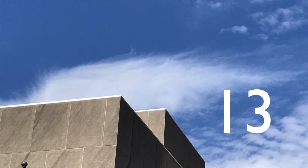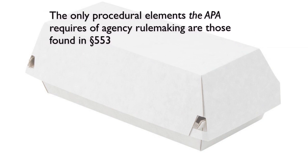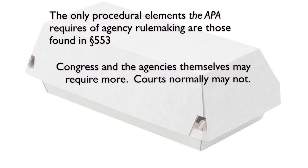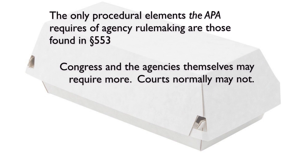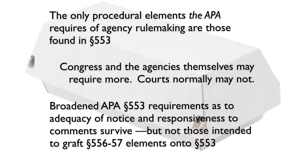Welcome back. Previously on Administrative Law, we continued our study of rulemaking procedures. The only procedural elements the APA requires of agency rulemaking are those found in section 553. Congress and the agencies themselves may require more; courts normally may not. Broadened APA section 553 requirements as to adequacy of notice and responsiveness to comments survive, but not those intended to graft section 556-57 elements onto section 553.